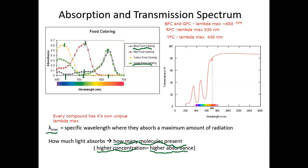Every compound has a particular lambda max — one point in the visible spectrum where it absorbs the most energy. In the virtual lab, you'll scan the entire visible spectrum to find the lambda max for your particular compounds. Plotting percent transmittance versus wavelength shows that wherever there is strong absorbance, there is very little transmittance — absorbance gives peaks while transmittance gives valleys at those same wavelengths.